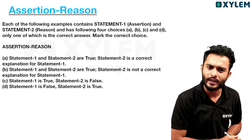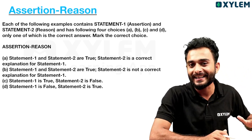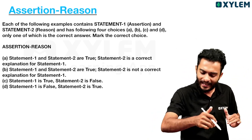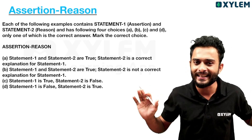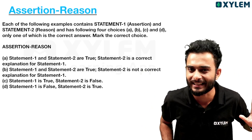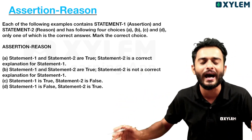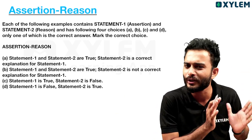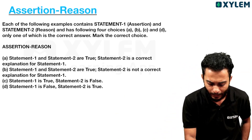Statement 1 is given, Statement 2 is given. That's Statement 1 is the assertion, Statement 2 is the reason, okay? I'm going to give you four options: A, B, C, D. These four options — any one is selected.